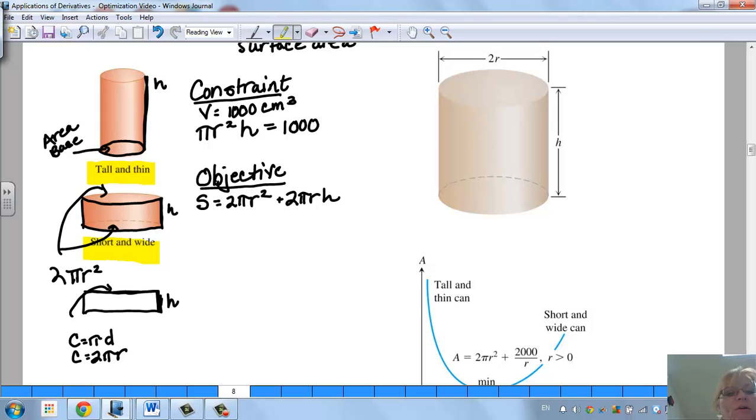Now what we're going to do is take this constraint equation that we have right here, and we want to somehow put it in our objective. So we need to solve for something, and it looks like the easiest thing to solve for would be height. So the height is going to equal 1,000 divided by pi r squared.